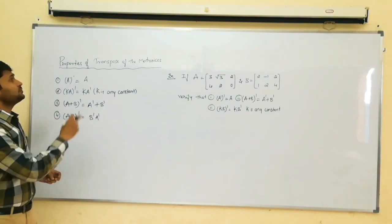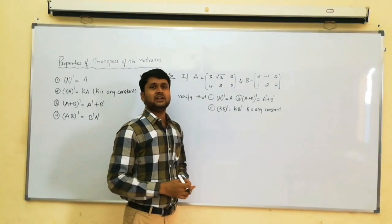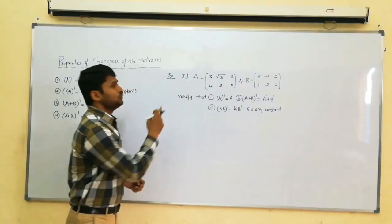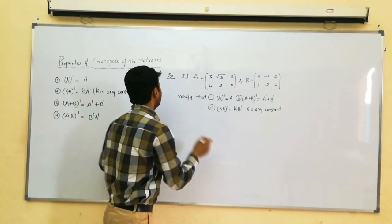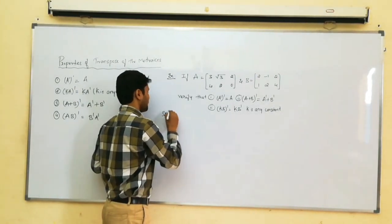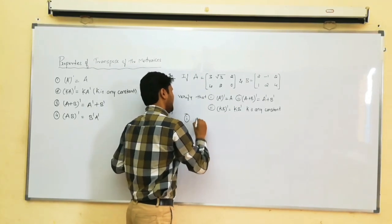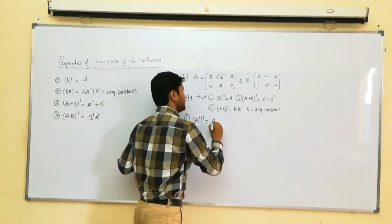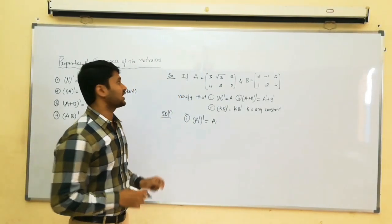Based on these properties, go to the first example. Here they have given matrix A and matrix B. Using these two matrices, we have to verify the first property. Go to solution. First one: A dash whole dash is equal to A. We have to check if this is correct.